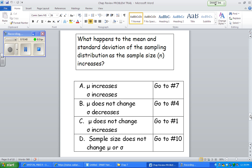Okay, again, less variability as n gets larger. So, option B there. Mu does not change. Sigma decreases.